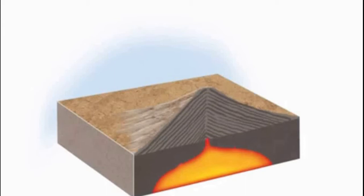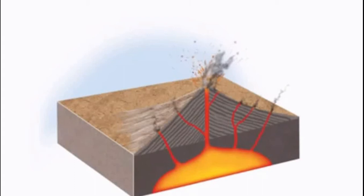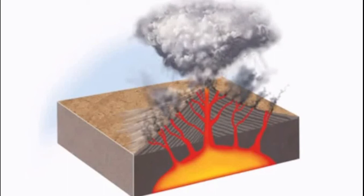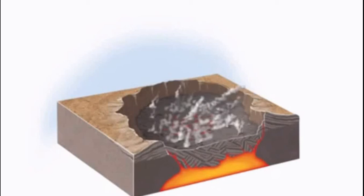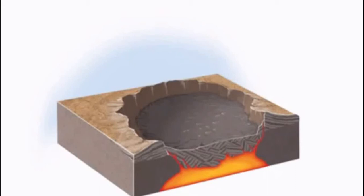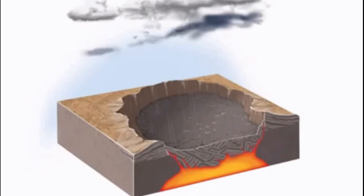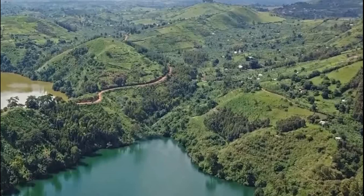Caldera lake formation: as magma from the chamber extrudes lava into the earth's crust, it blows off due to the deep pressure and less pressure near the surface, causing massive explosions which blow off the top of the volcano. After an eruption, the emptied magma chamber of the volcano can collapse inward, forming a large circular depression called the caldera. Calderas can be many kilometers wide and usually have a flat base and steep slopes. Over time, the caldera basin may be filled with water, forming a caldera lake.